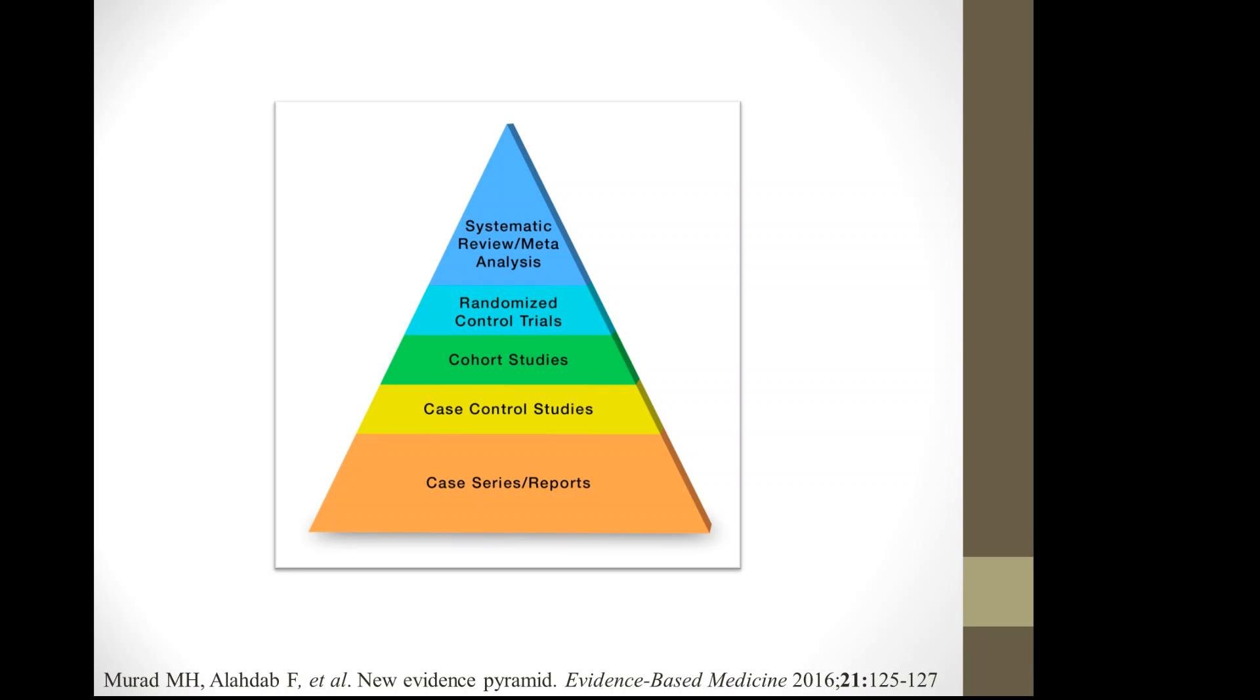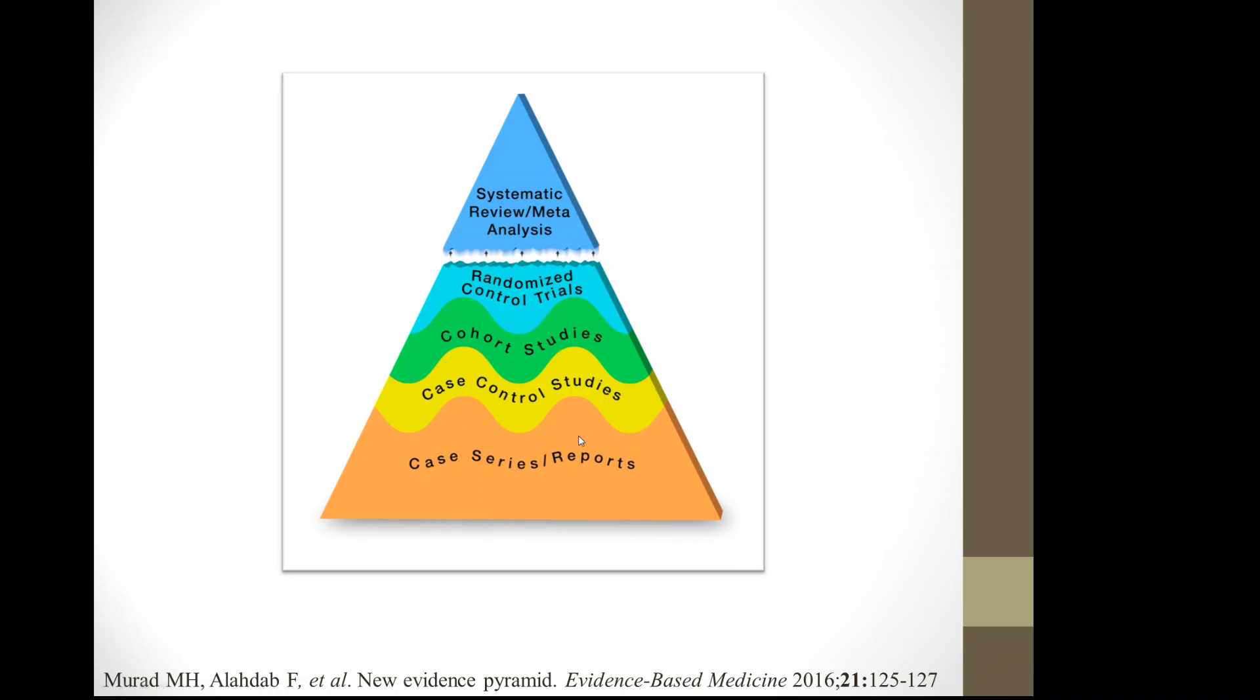Of course, study design is taken into consideration, but basically the message here is that it is not the only factor that can be used to judge the risk of bias in any single study. So, what that looks like now is like this. Just look at the lower part here. These wavy lines reflect the idea that some cohort studies are better than case control studies, but some case control studies can be better than some cohort studies. Same thing here is that some cohort studies can actually be better than some randomized control trials.